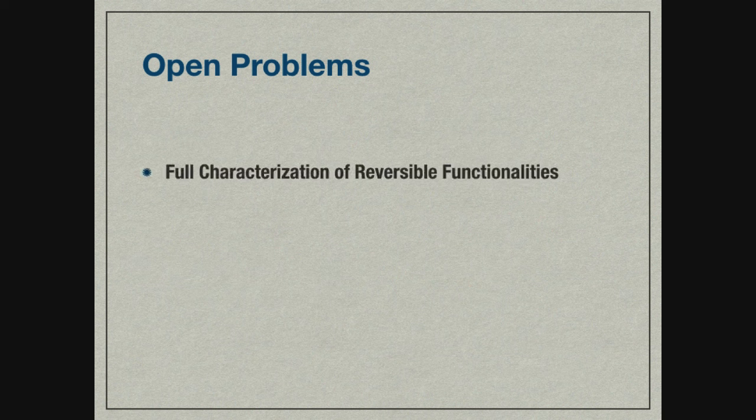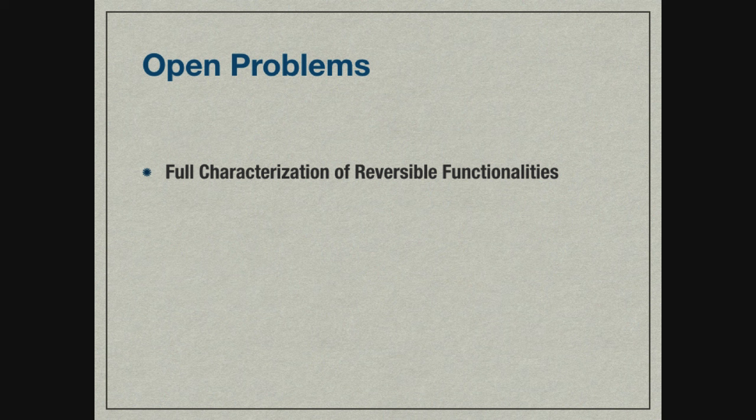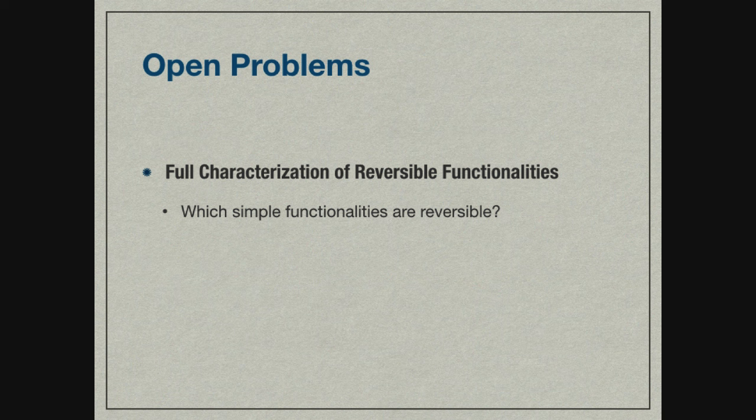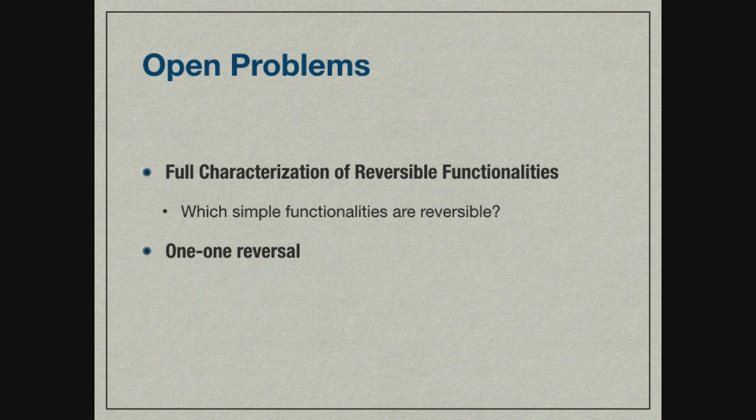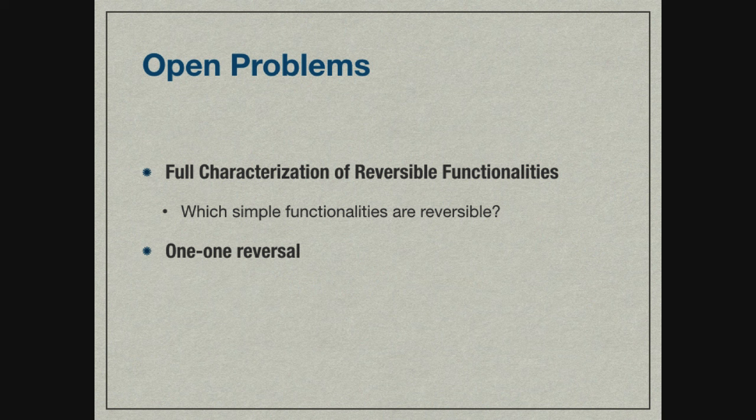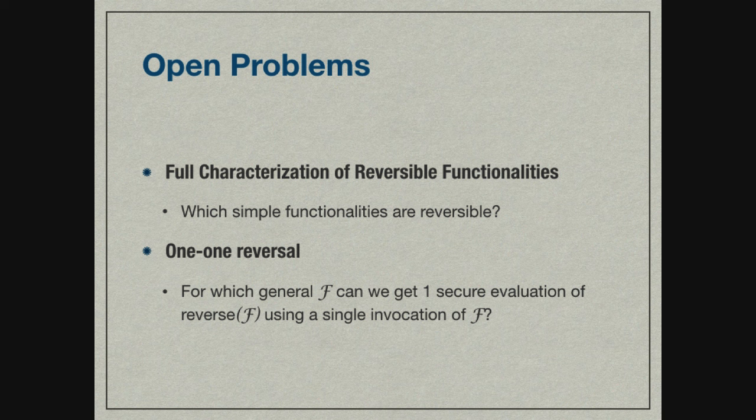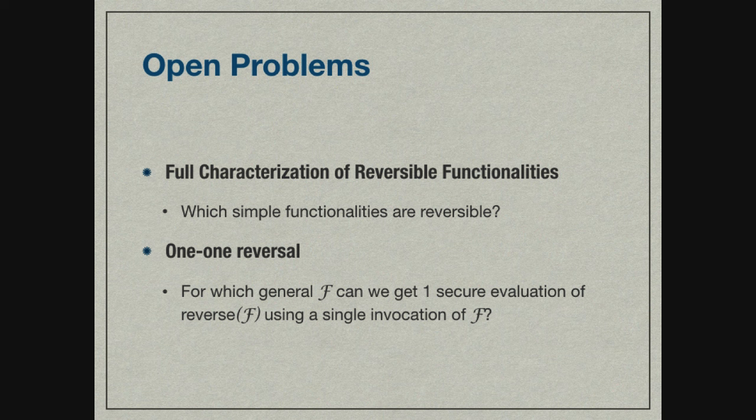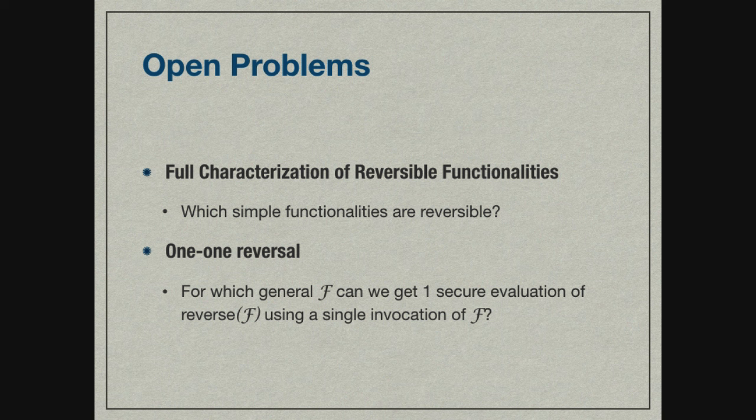Finally, the open problems. We do show that any non-simple F can be reversed, but it's not clear whether all simple functionalities are reversible or not. It's an open problem to study which simple functionalities are reversible, and therefore obtain a complete characterization of functionalities that can be reversed. Moreover, we achieve constant rate reversal, but it is interesting to see if you can use one copy of a functionality, or basically one Oracle access to a functionality, to get the reversed functionality. For the special case of OT, this was shown to be true by Wolf and Wullschleger, but we don't know whether this can be done for other general functionalities, and that would be interesting.